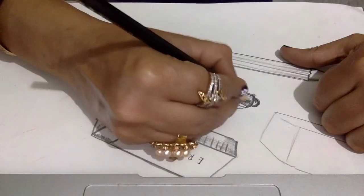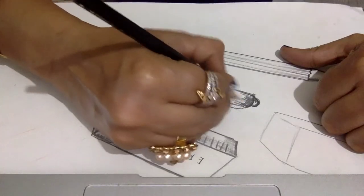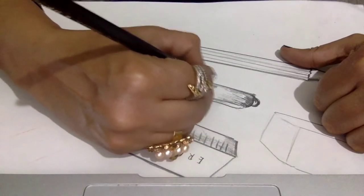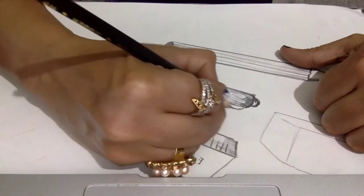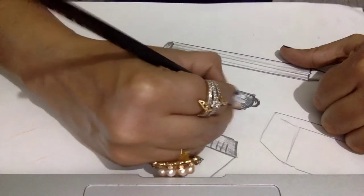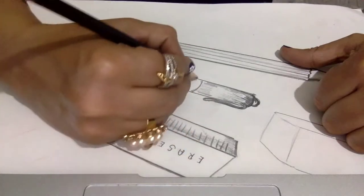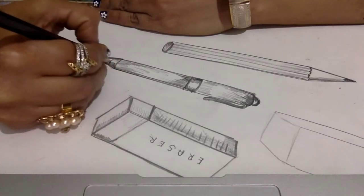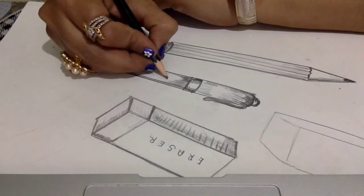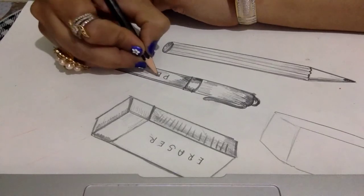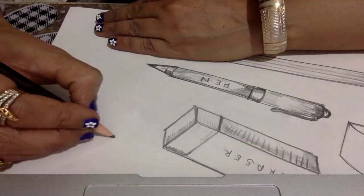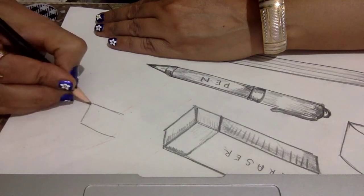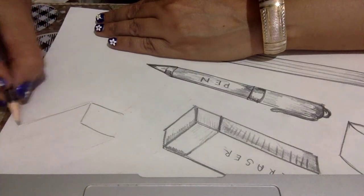Do some shading on it: give light tone, middle tone and dark tone. The effect of the light should be shown here. Give shading properly. You can also write 'pen' on the drawing. Next, we are moving towards the drawing of the sharpener.